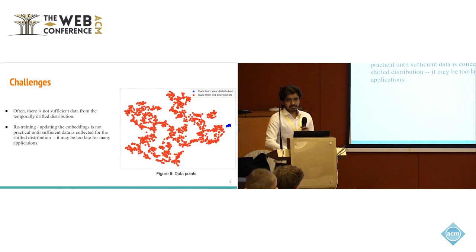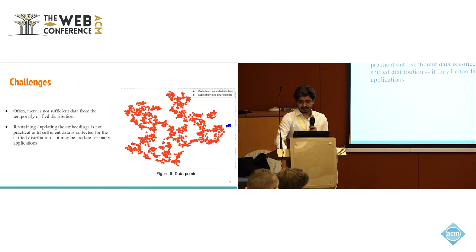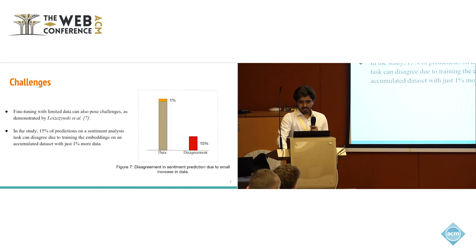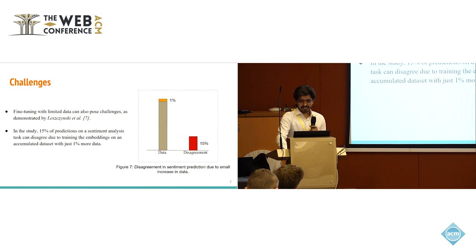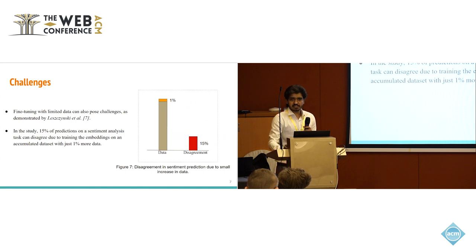But the challenge is, in situations of temporal drift, the existing data from the new distribution is not sufficient, and these word embedding models require a huge amount of data for training. Retraining or updating the embedding is not practical due to the scarcity of data from the shifted distribution, and it may be too late for many downstream applications. Even if we talk about fine-tuning, it has its own drawbacks. As per the study of Lezinski et al., if we train embeddings after just adding 1% of additional data, it can disagree on 15% of predictions on a sentiment analysis task.